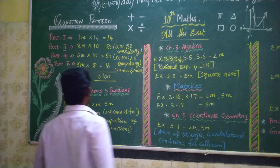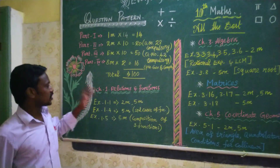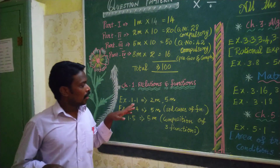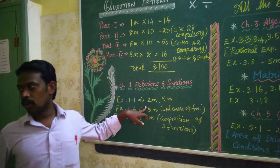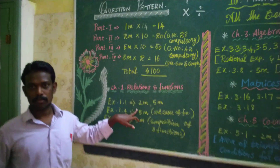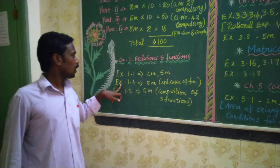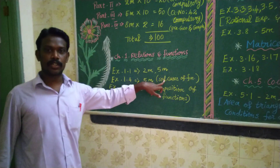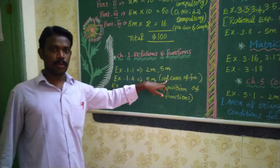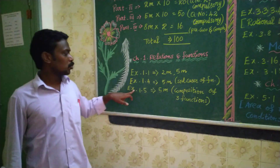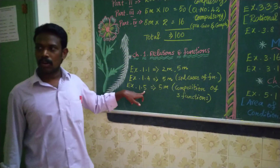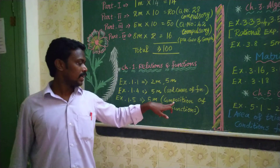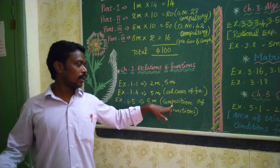First we select Chapter 1: Relations and Functions. Exercise 1.1 — we expect 1 two-mark question and 1 five-mark question. Exercise 1.4 — we expect 1 five-mark question. We expect special cases of functions. If you find F1, F2 and F3. Exercise 1.5 — what we expect is the composition of 3 functions: F, G of X and other data functions. The last plan covers 3 to 4 functions.